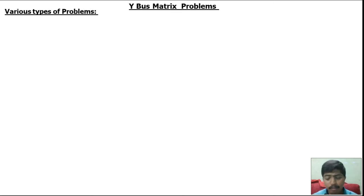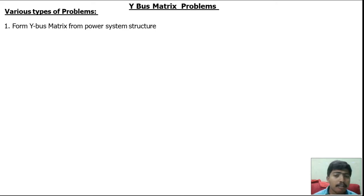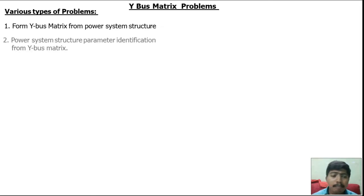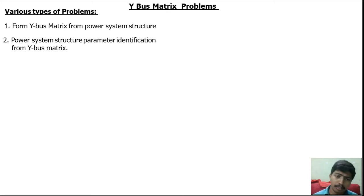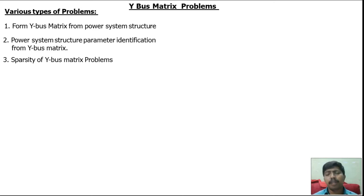In the Ybus matrix there are various types of problems. The first type is: the power system structure is given and we have to find the Ybus matrix from the power system structure. The second type is: Ybus matrix is given and we have to find the power system structure parameters from the Ybus matrix. The third type is: we have to find the sparsity of the Ybus matrix — what is sparsity and how to find it.